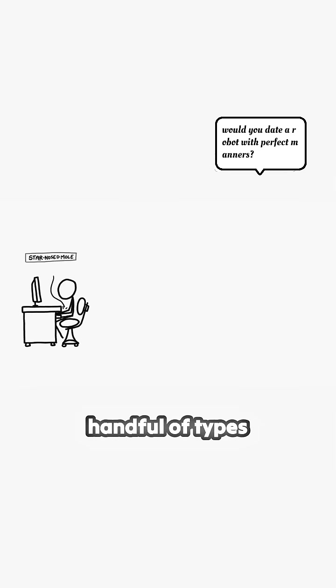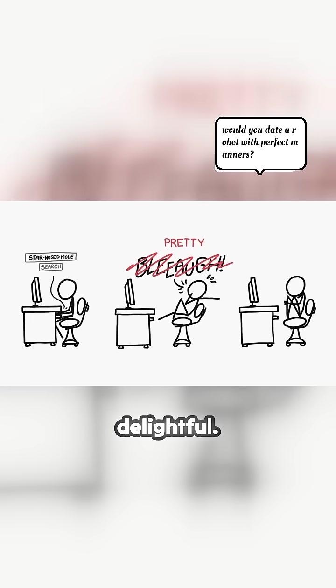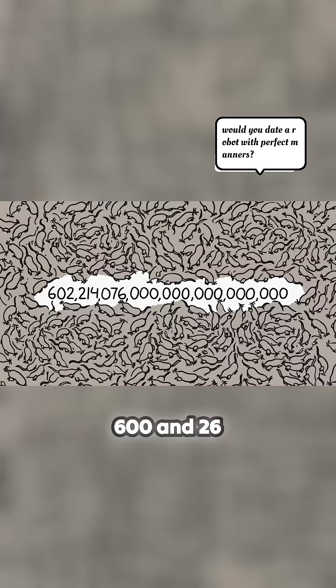A mole is also a type of small burrowing mammal. There are a handful of types of moles, and some of them are horrifying. I mean, delightful. So what would a mole of moles, 602 sextillion, 214 quintillion, 76 quadrillion furry mammals, look like?